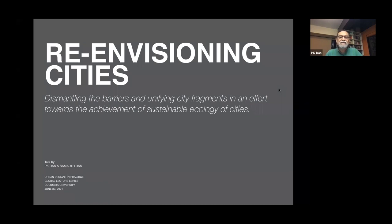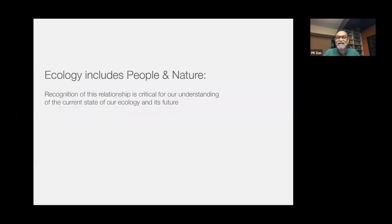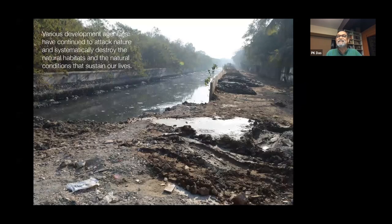Samarth and I are very deeply concerned about the state of relationship between people and us collectively with nature. For us, ecology includes people and nature — the two are inextricably entwined and neither are exclusive. Recognition of this relationship is critical for our understanding of the current state of ecology and its future. Any attempt to separate one from the other, which has always been the tradition historically speaking, is to undermine our struggle for the achievement of sustainable ecology. Sadly, governments and development agencies over the years have continued to attack nature and systematically destroy the natural habitats and natural conditions that sustain our lives.